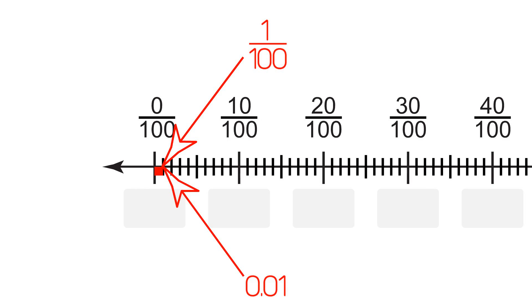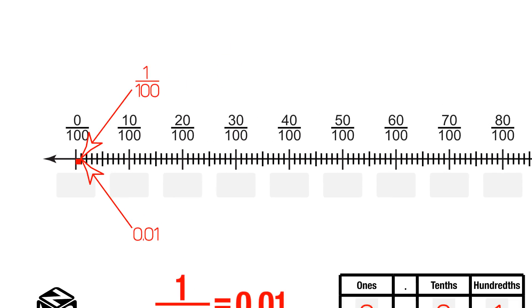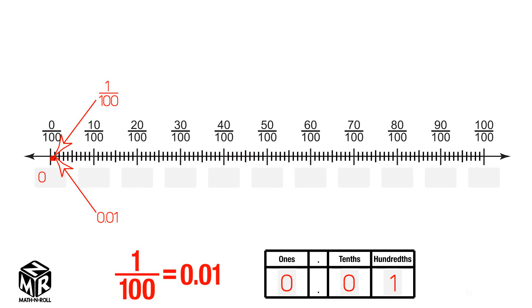Label the number line with decimals that are equivalent to the fractions: 0 hundredths, 10 hundredths, 20 hundredths, 30 hundredths, and so on.